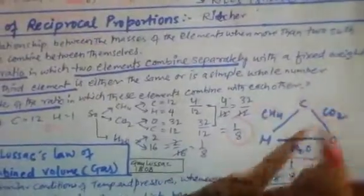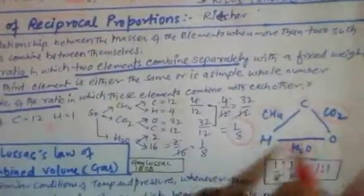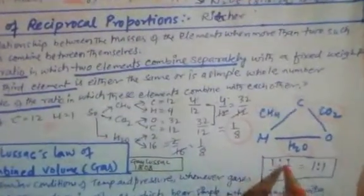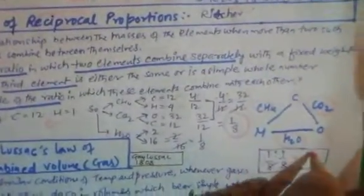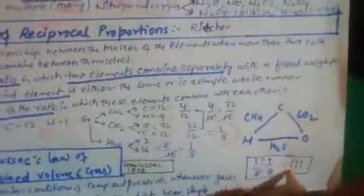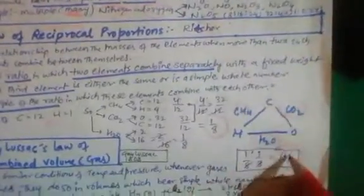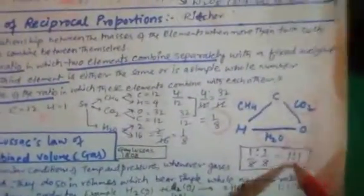In H₂O, the ratio is 2:16, giving 1:8. When we divide the ratios of the separately combined elements, we get the simplest ratio of 1:1 or 1:8. This simplest ratio obtained by dividing the two separate ratios is called the reciprocal proportion.